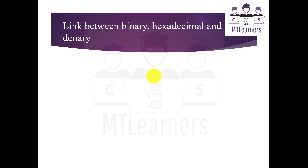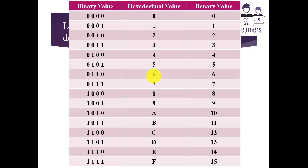Now, what is the link between binary and hexadecimal numbers? To show this link I will be showing you a table. In this table we have three columns: one representing binary values, another representing hexadecimal, and the third representing decimal values.